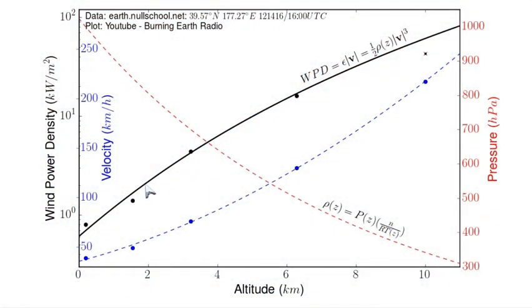To further explore what's going on with velocity and wind power density, I've made this plot. I've gone to a specific place in Earth Null School, in the North Pacific Ocean, and recorded the velocity going up in the atmosphere as you go up with altitude. I've also looked at the wind power density, and I have the corresponding values for these points.